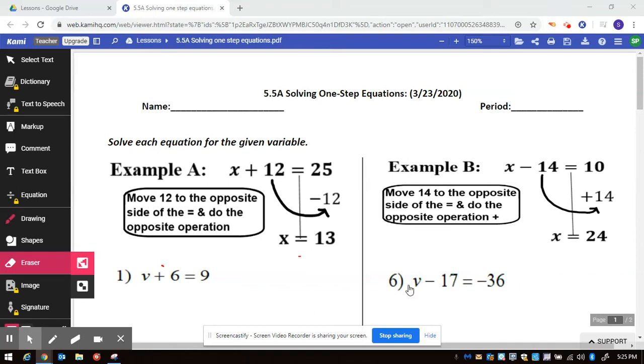Hey there, we're going to look at 5.5a solving one-step equations. Example A says to move the 12 to the opposite side and do the opposite operation.